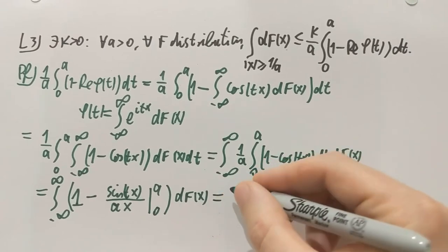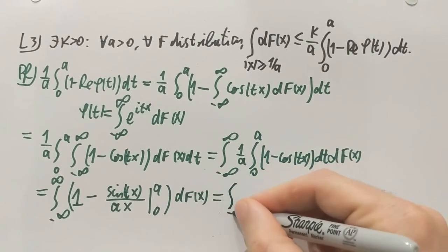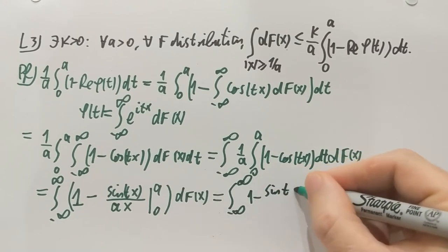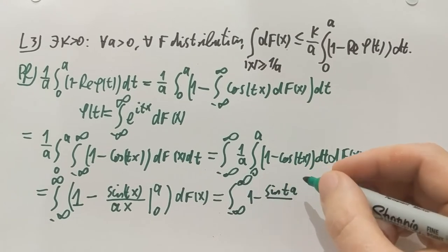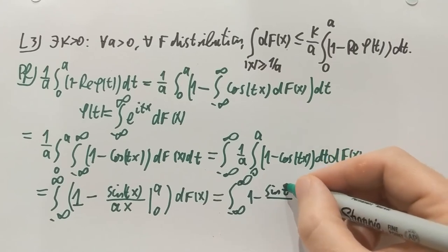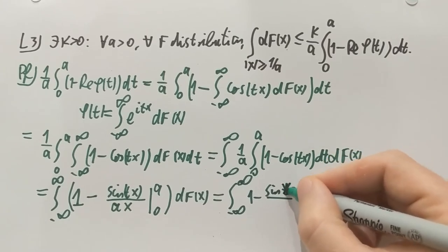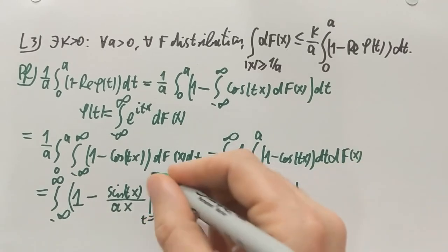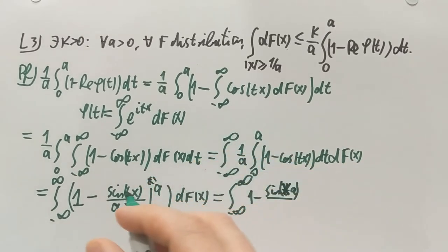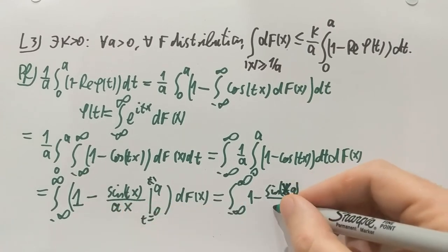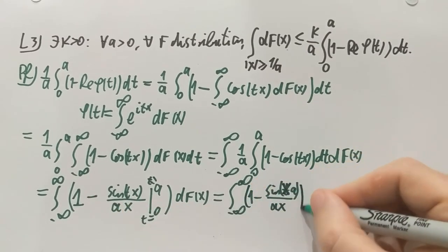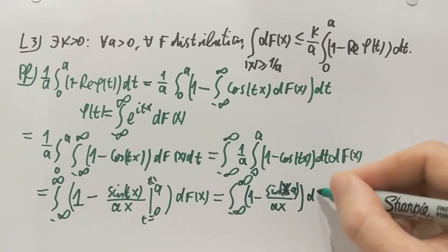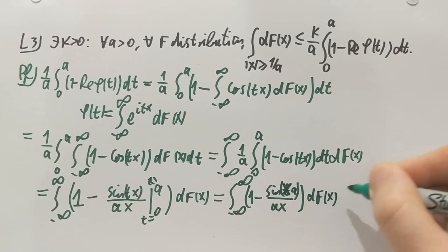So this 1 over a comes here. The x comes out from the inner bits of the cosine function. It's treated as a constant with respect to the t integration. And that just gives me the integral from minus infinity to infinity of 1 minus sine of ax over ax. Because this is t equals to 0 and t equals to a. Integrated against df.